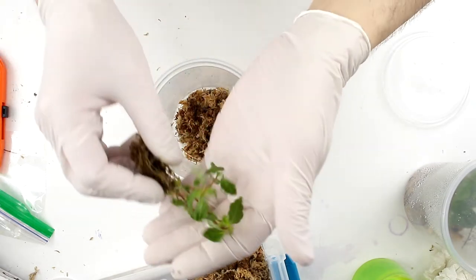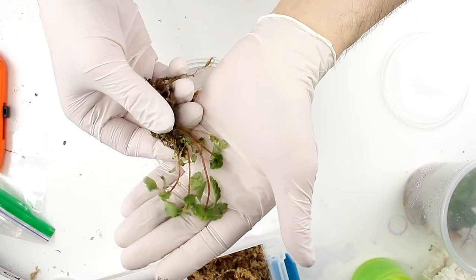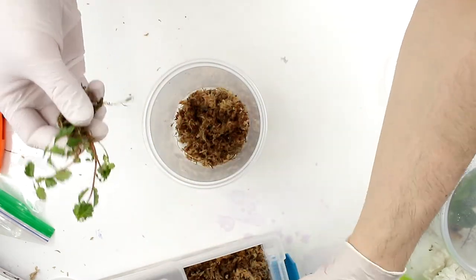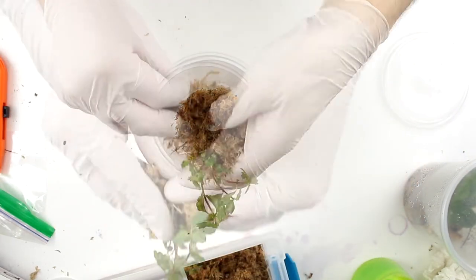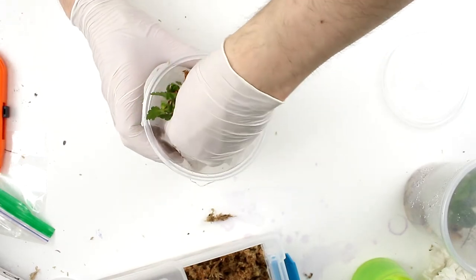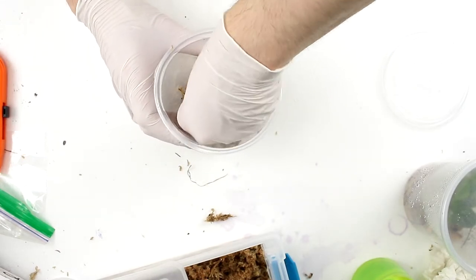Got my plant here. This is a Pilea species Ecuador. I'm just going to grab some more sphagnum, wrap it around, and then I'm just going to set the plant in where I want it.